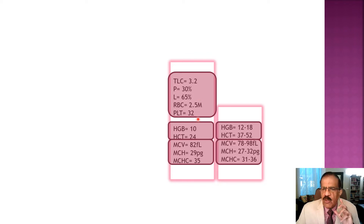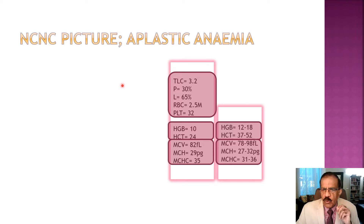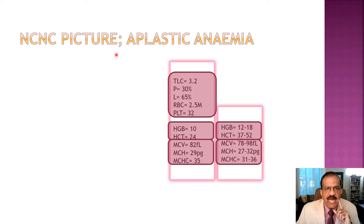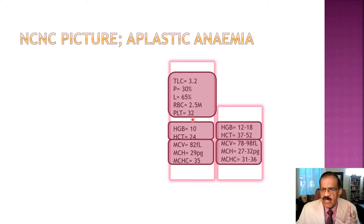Although leukemias can also produce this picture, in most cases this presentation suggests aplastic anemia. The diagnosis is a normochromic normocytic anemia with pancytopenia - absence or deficiency of all three cell lines - confirming this is a case of aplastic anemia.